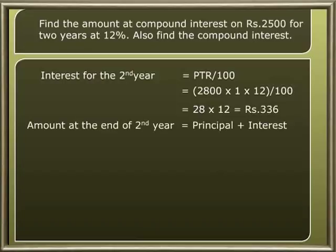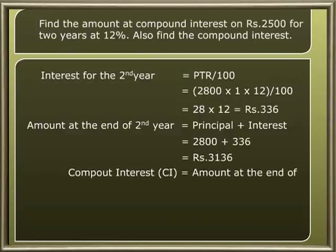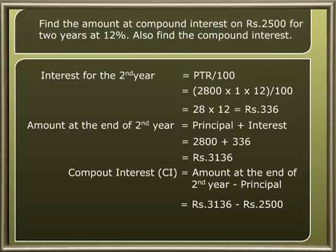The amount at the end of the second year is equal to principal plus interest, that is 2800 plus 336, which is equal to rupees 3136. So the compound interest is equal to the amount at the end of the second year minus the principal, which is rupees 3136 minus rupees 2500, therefore the compound interest is rupees 636.